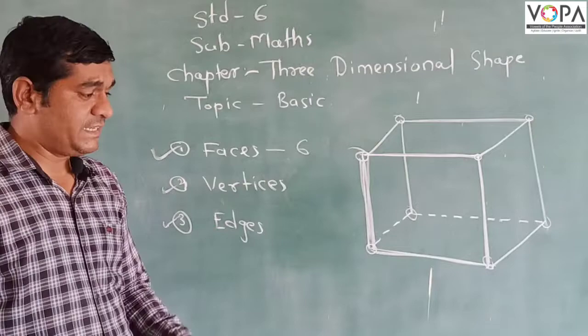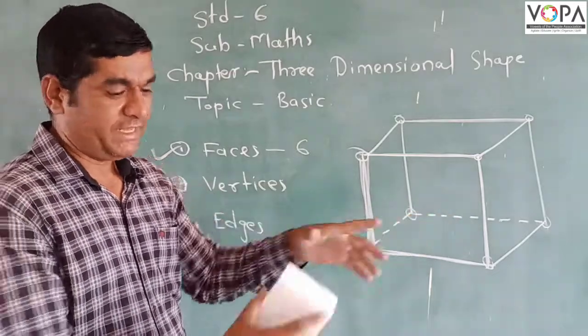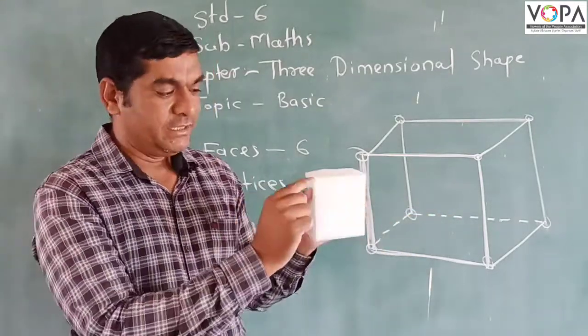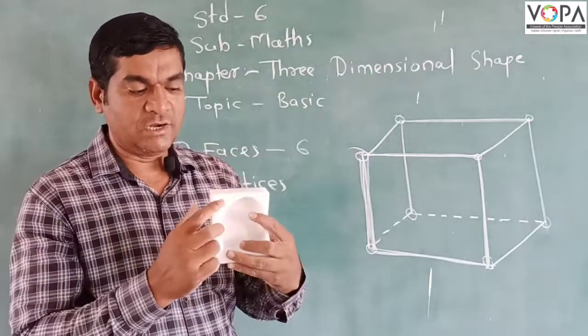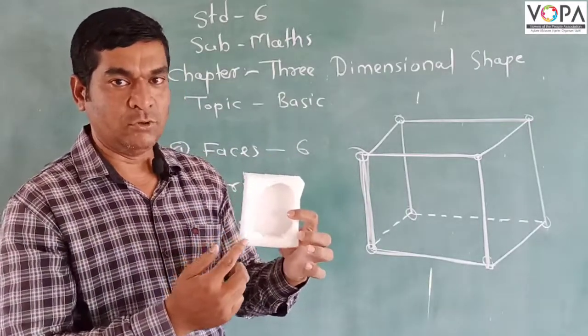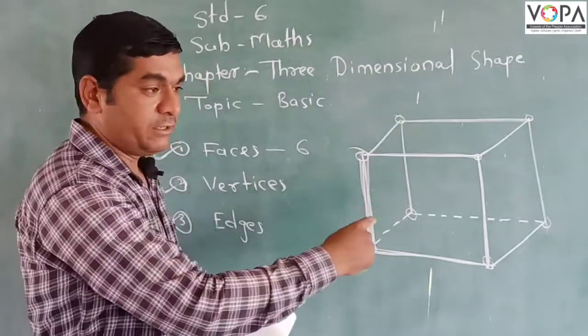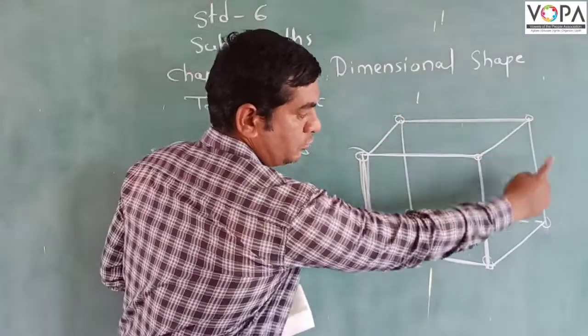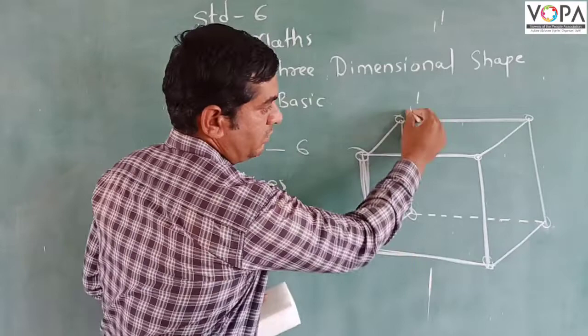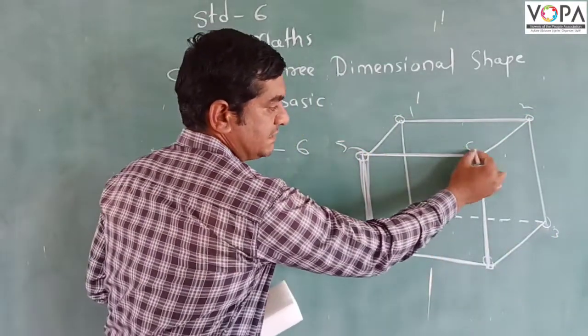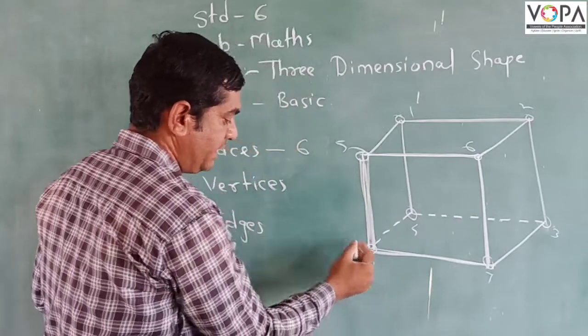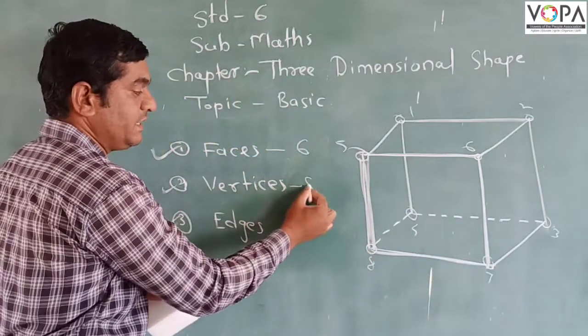So how many vertices are there? You should go by the diagram there. Then 1, 2, 3, 4, and the back side 1, 2, 3, and 4. Total counting we find here: 1, 2, 3, 4, and 1, 2, 3, 4. Then 5, 6, 7, and 8. So the vertices will be 8.